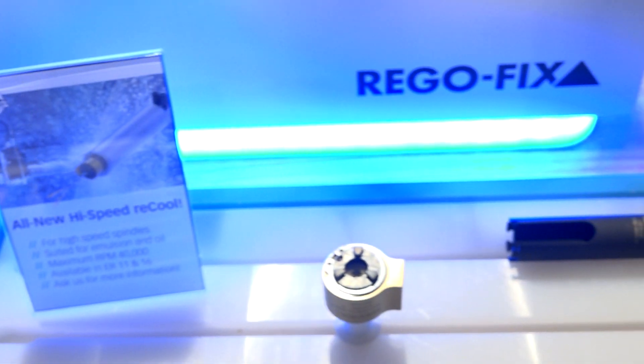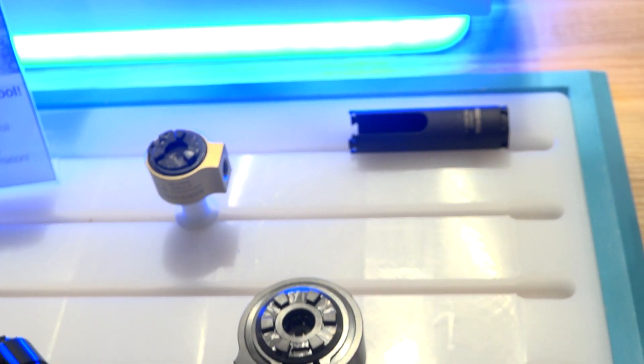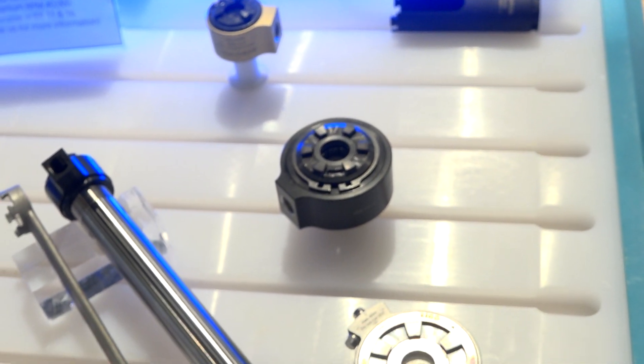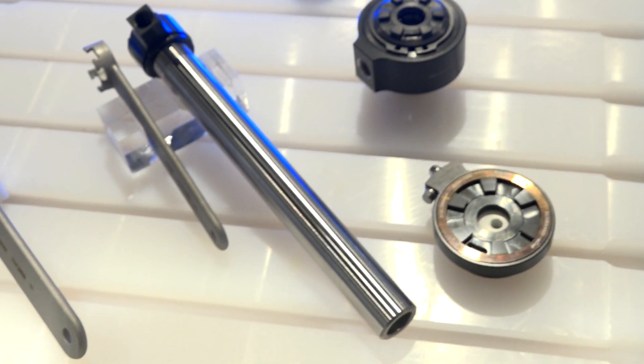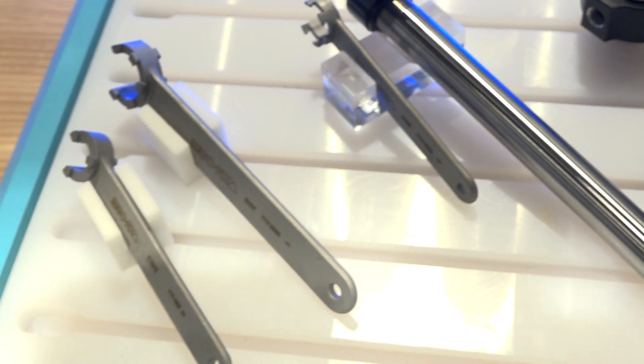So, we can actually not just go with a regular gear drive live head. We can actually go on the electrode spindles up to 40,000 RPMs with a recool unit, which is really impressive.